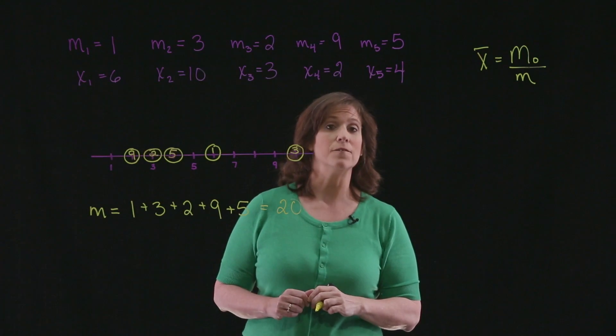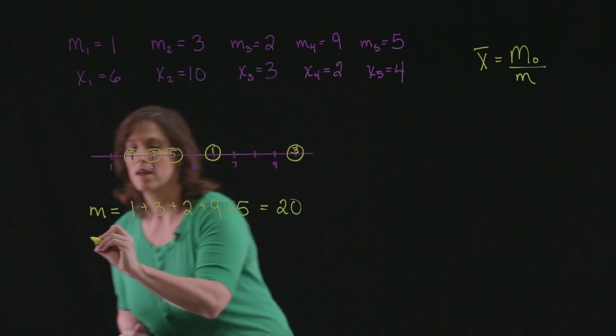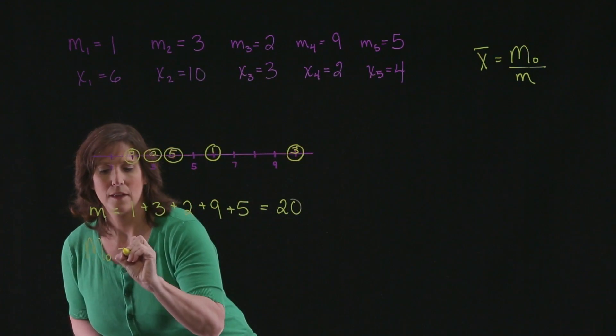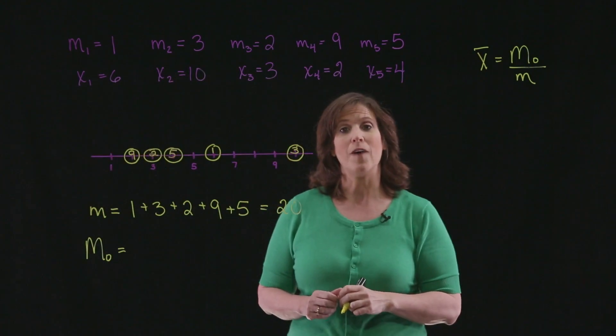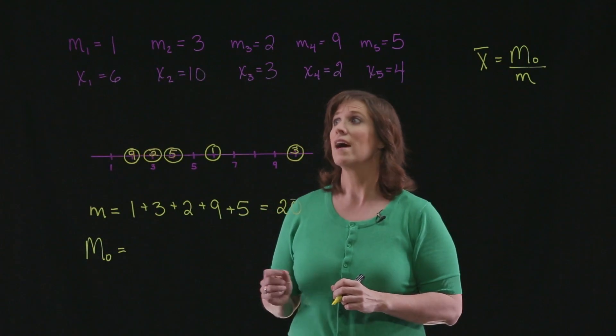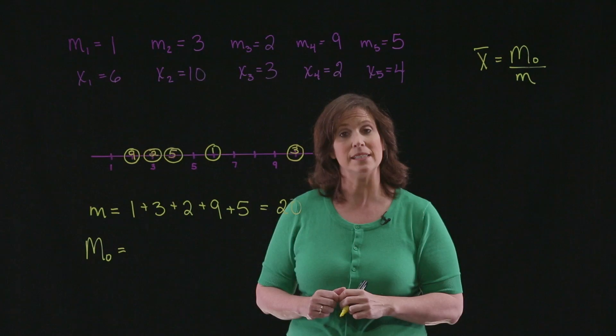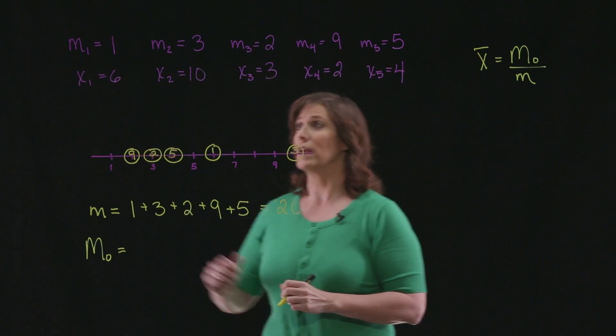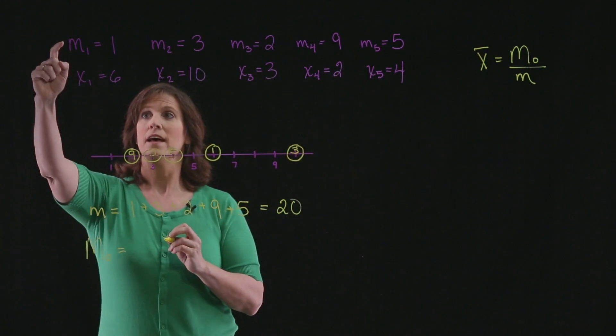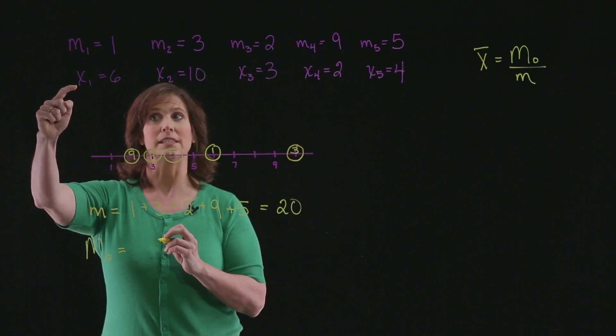The next thing to do is to find the moment. To find the moment, we're finding the sum of the products of the mass and the directed distance from the origin. So for each of these points, I'll have the mass times the distance from the origin.